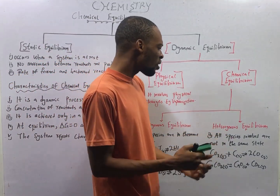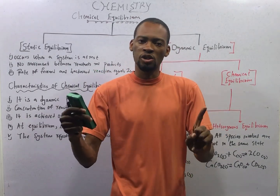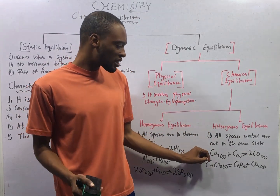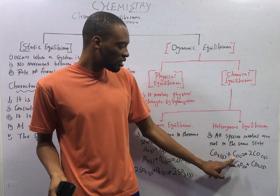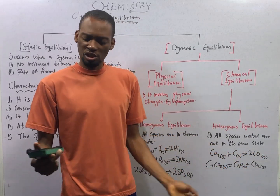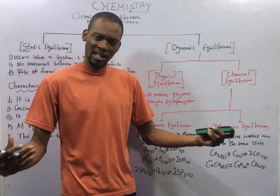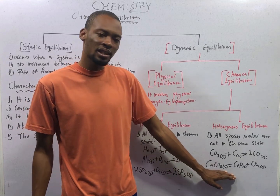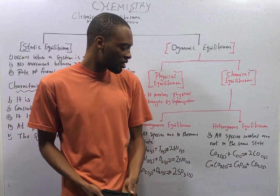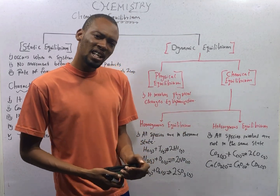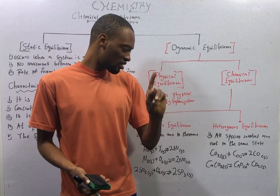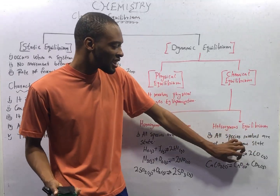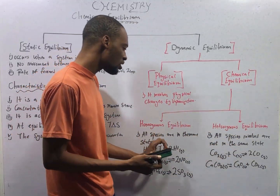In heterogeneous equilibrium, all the species involved are not in the same state of matter. For example: carbon dioxide gas reacts with carbon solid to give us carbon monoxide gas — there is a mixture of solid and gas, not the same state of matter. Look at limestone: CaCO₃ solid breaks down to give us calcium oxide solid plus carbon dioxide gas. They are in different states of matter, so this is a heterogeneous equilibrium.